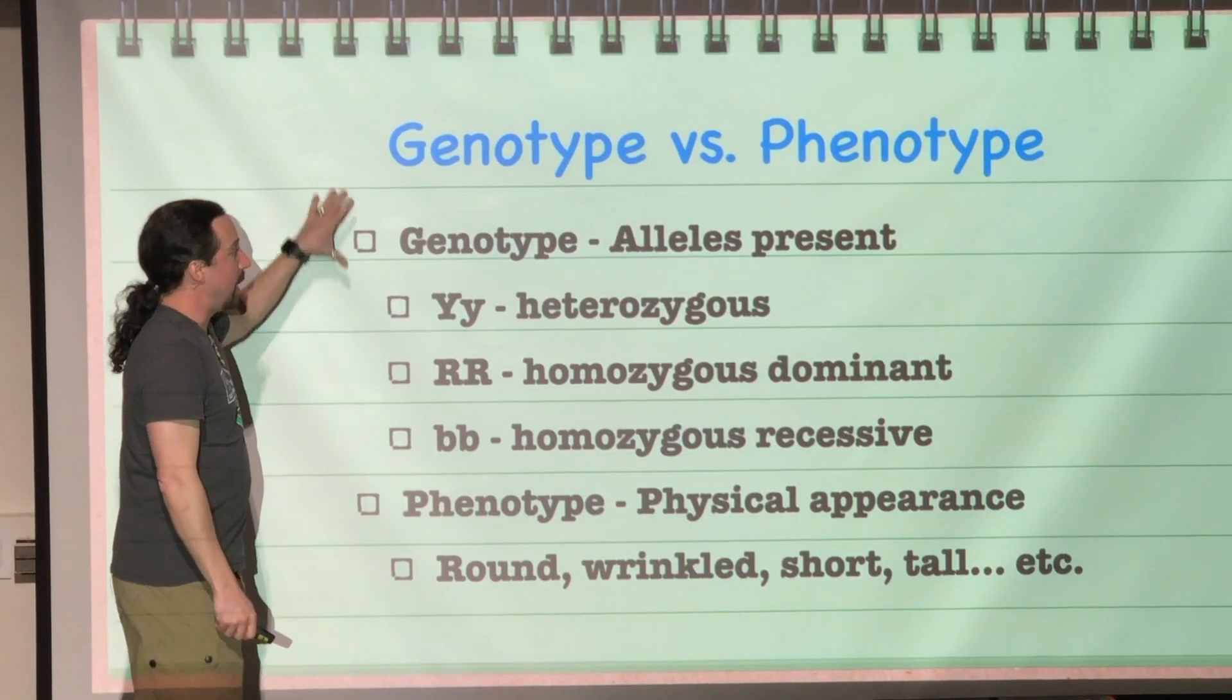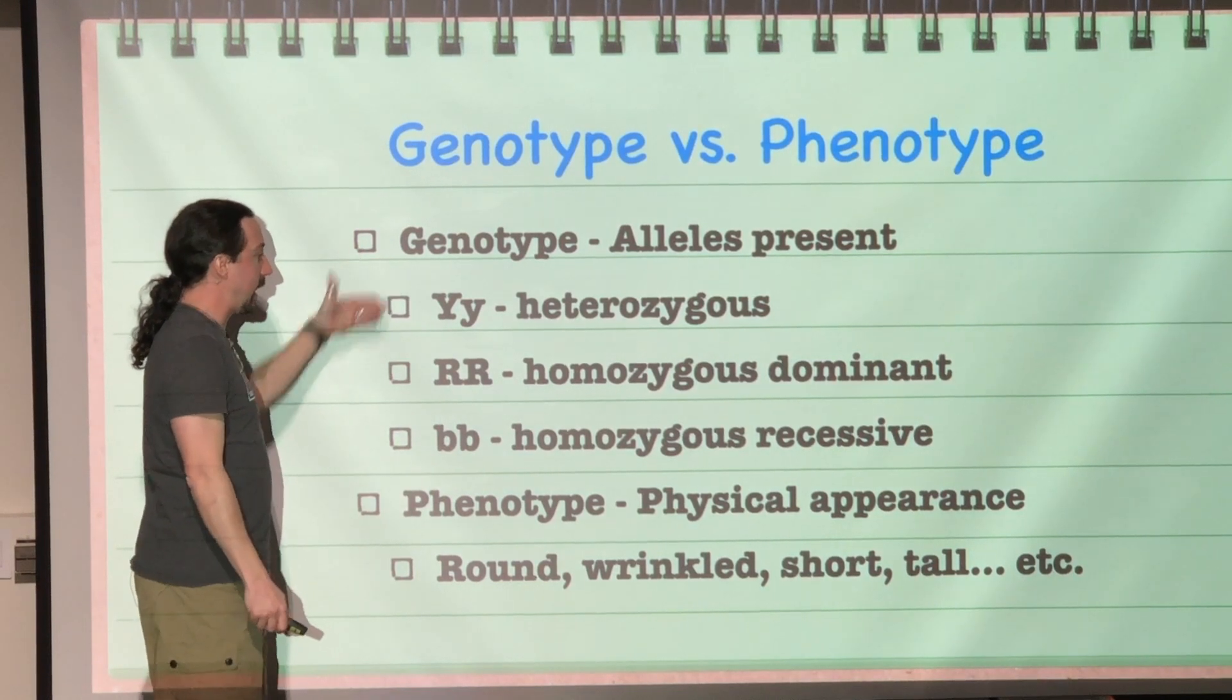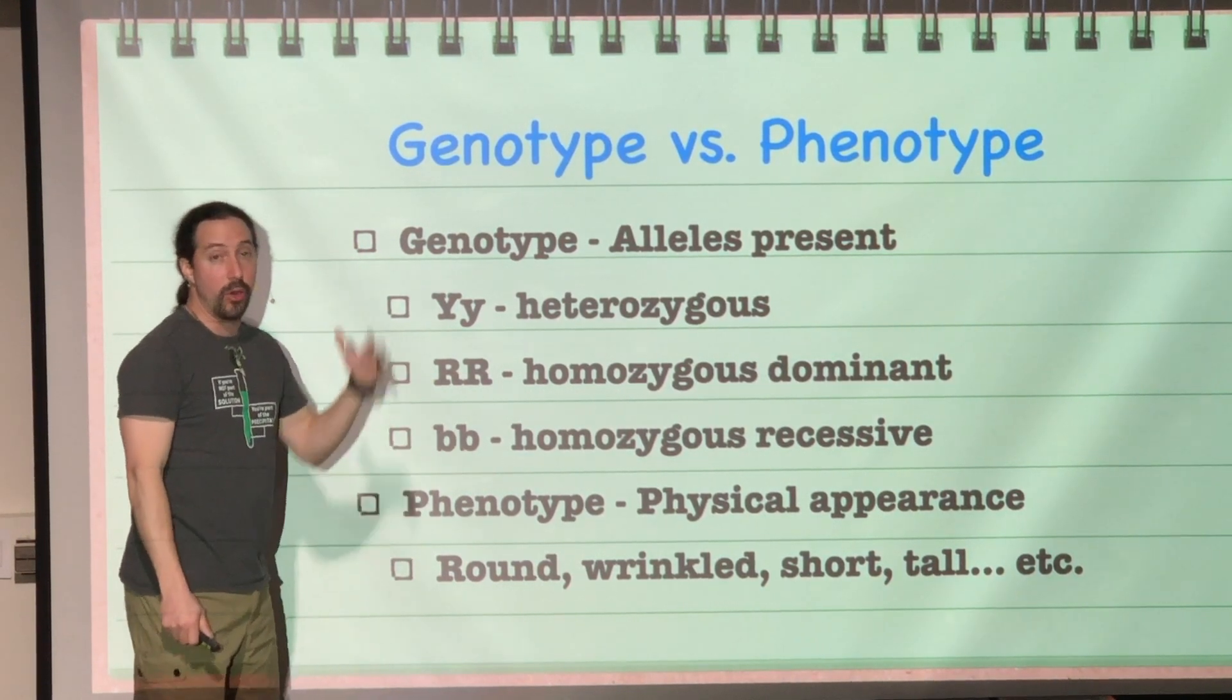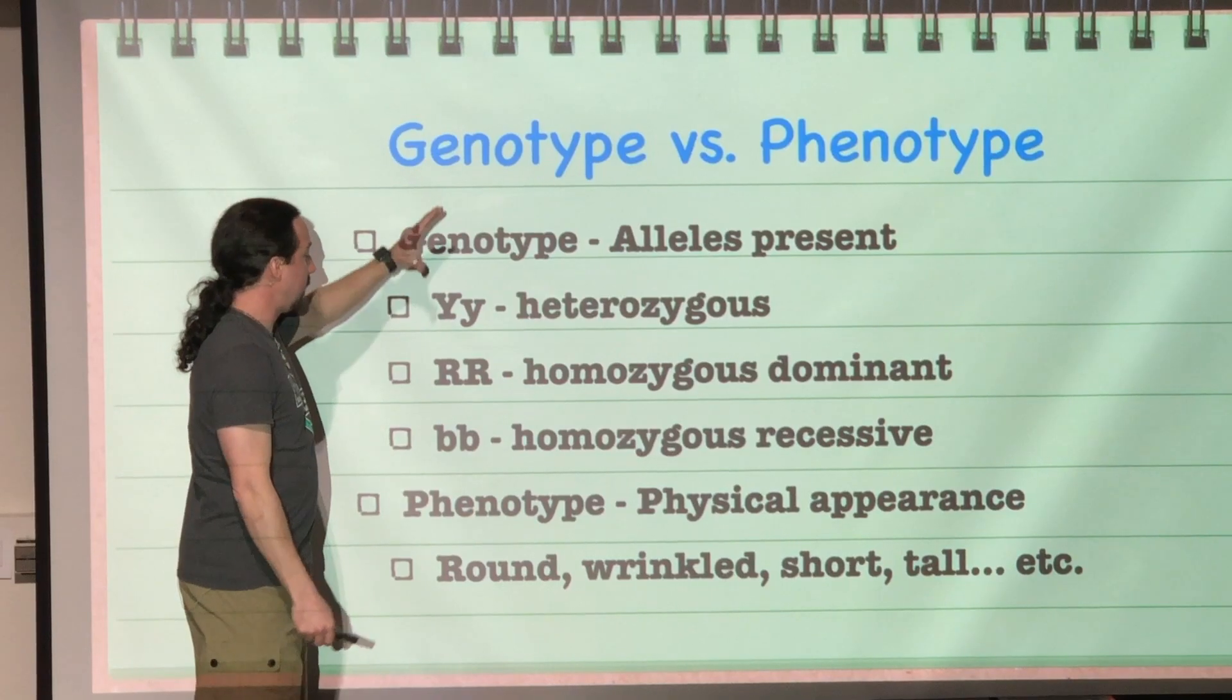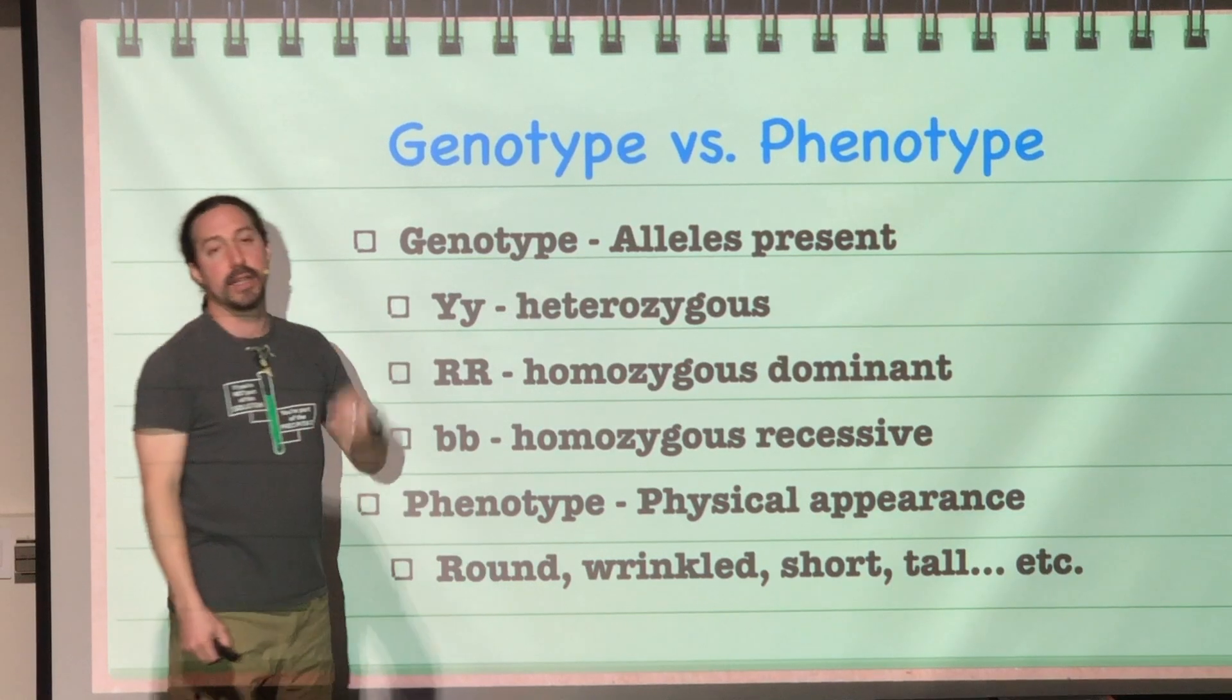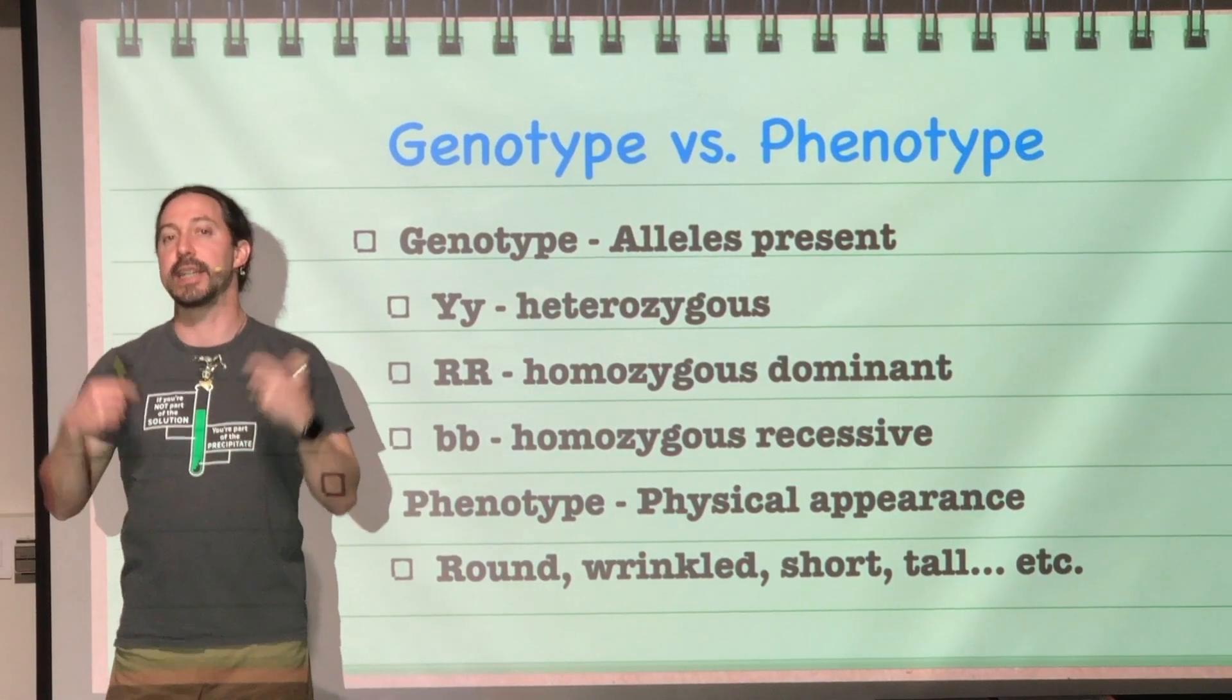So the genotype is the alleles that are present—it could be heterozygous, homozygous dominant, or homozygous recessive. The phenotype is the actual appearance that's taking place. We can always keep these in mind: the genotype is the alleles, and the phenotype is the way it appears or how those characteristics are expressed.